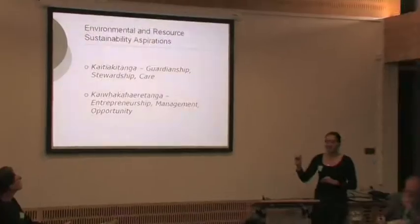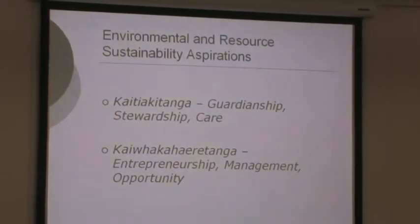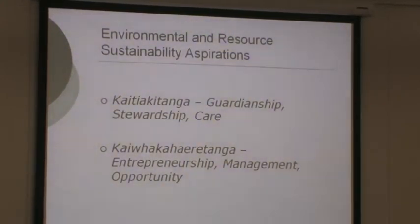There are two core values that I want to talk about in regards to an economic crisis and our ability to achieve our environmental aspirations and resource sustainability use. Kaitiakitanga, which I'm guessing you're all familiar with, which is around guardianship, stewardship and care for the environment. But one that you may not be familiar with is kai whakahaeretanga, which is about entrepreneurship and management of assets and lands, not only for the care of the future, but also looking at how do we access markets as Māori through land use. How do we become sustainable with water use? In our farming practices, how do we continue to be sustainable? Two very different concepts, and I'm going to show you how an economic crisis may impact on those two concepts.